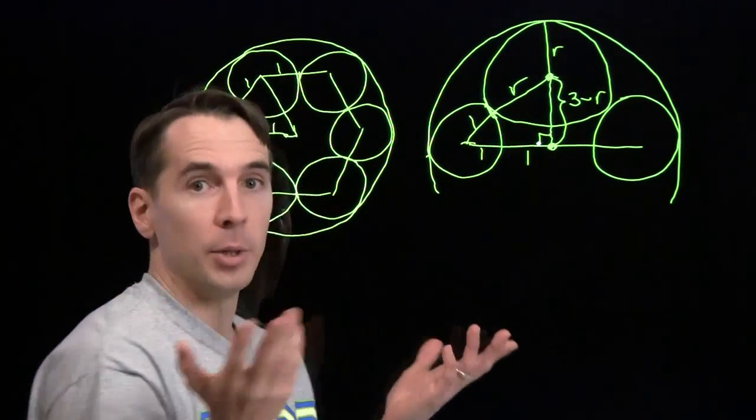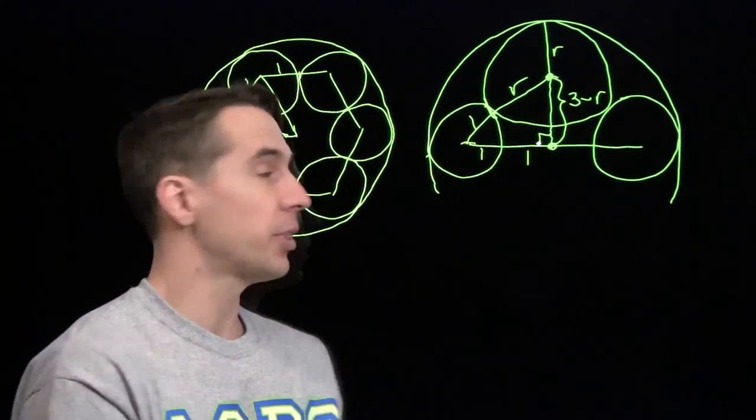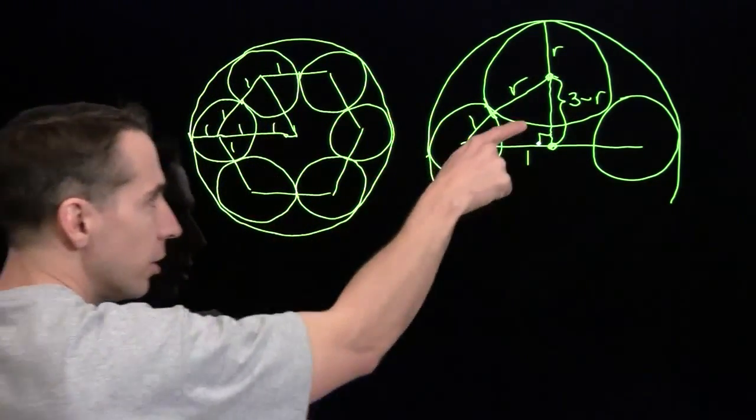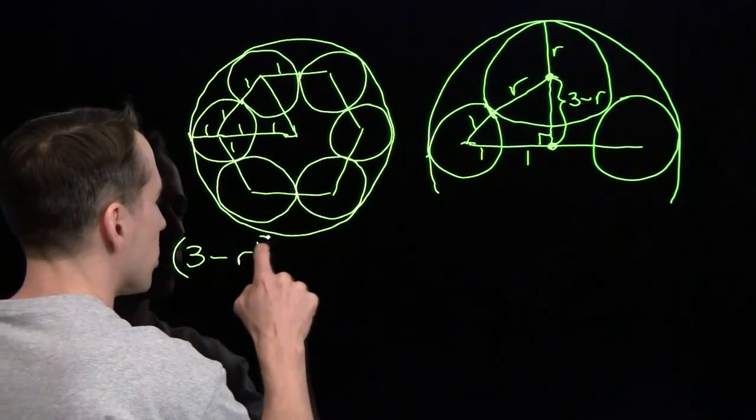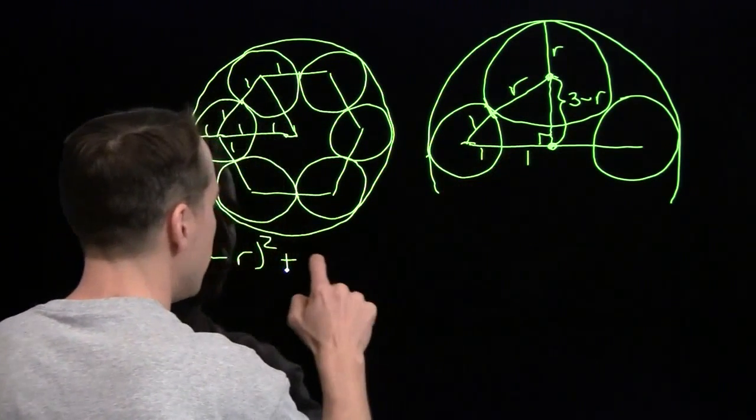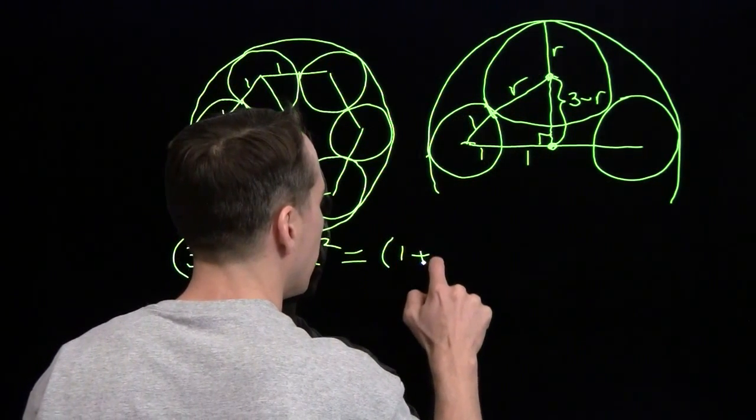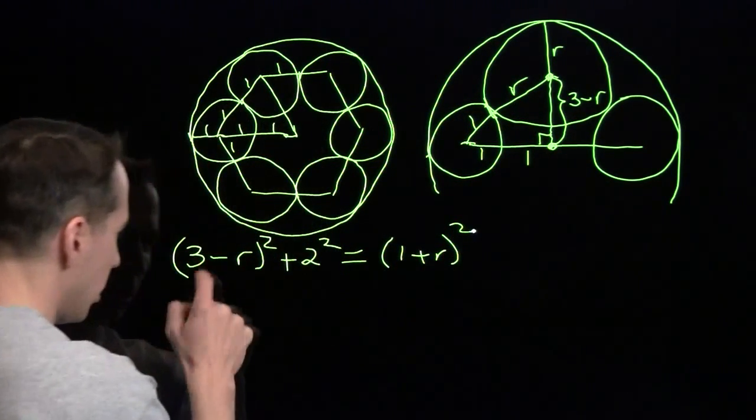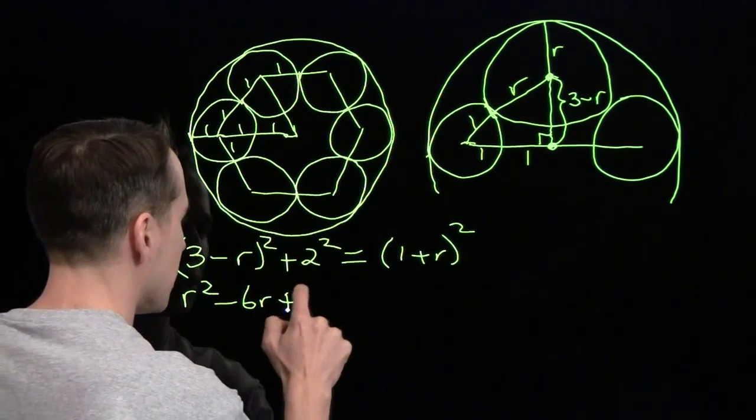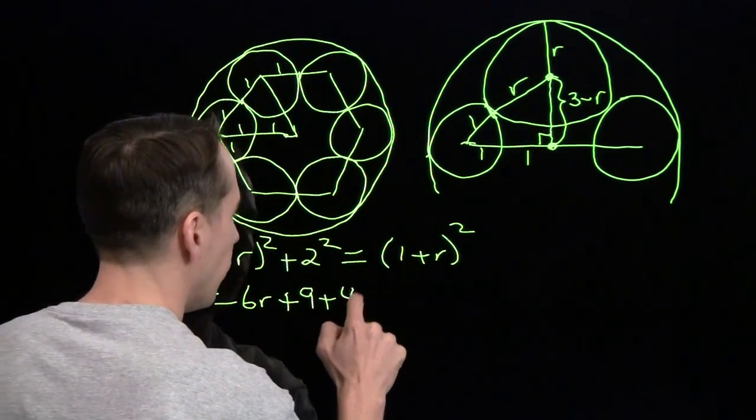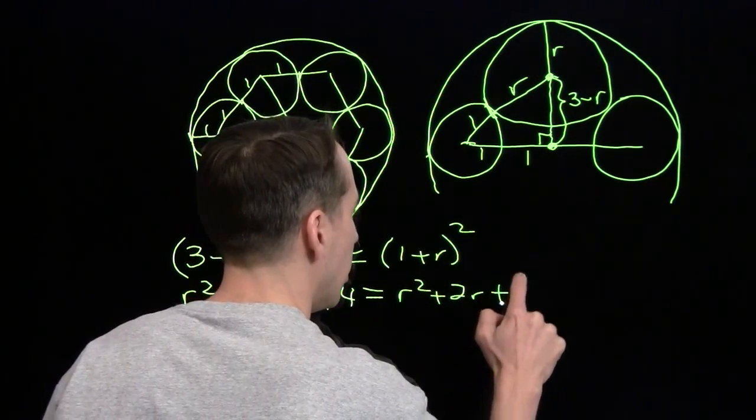We've got our classic geometry problem-solving strategy. Build a right triangle, use the Pythagorean theorem, and that's what we're going to do right here to finish the problem. We have (3 - r)² + 2² = (1 + r)². Go ahead and square this out. We have r² - 6r + 9 + 4 = r² + 2r + 1.